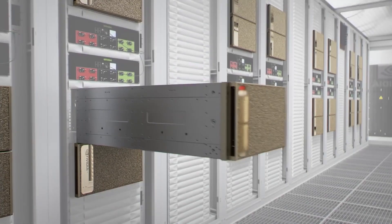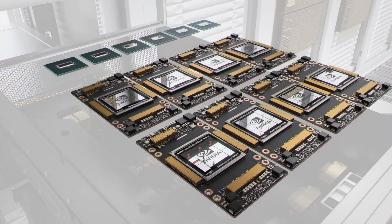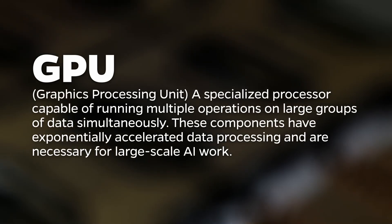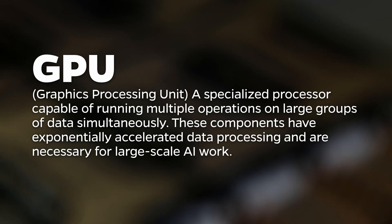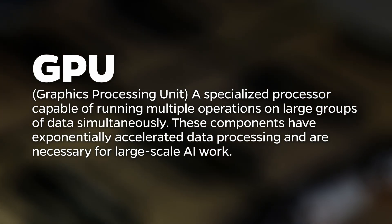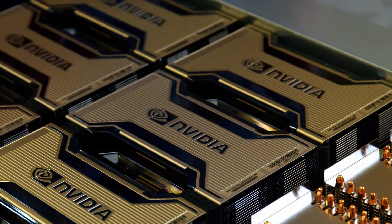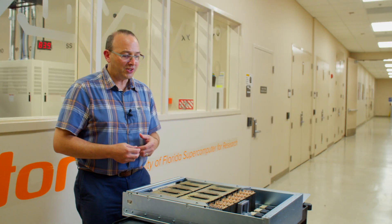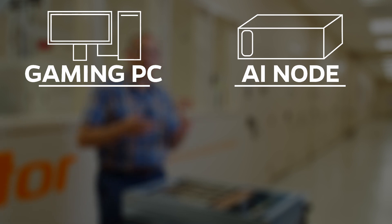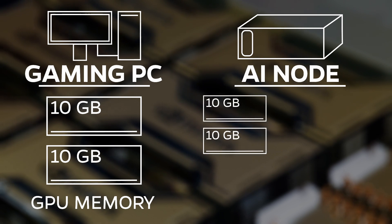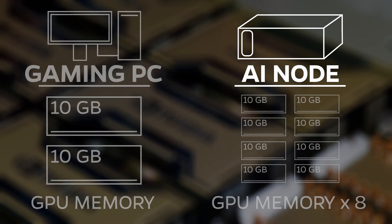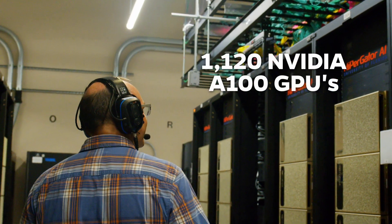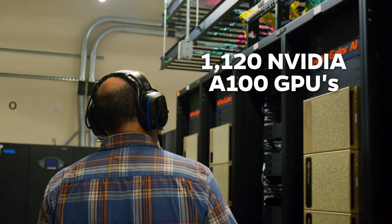So this is the GPU tray out of the DGX server. And when we open that up, now we have those eight A100 GPUs. Each of these is an A100 GPU, which is very similar to the GPU you would have in your high-end gaming system, but much more powerful. Those high-end gaming system GPUs probably have 12 to maybe 20 gigabytes of memory per GPU. The A100s have 80 gigabytes of memory. There are 140 of these servers in the room, each with eight GPUs — so a total of 1120 A100 GPUs in HiPerGator AI.